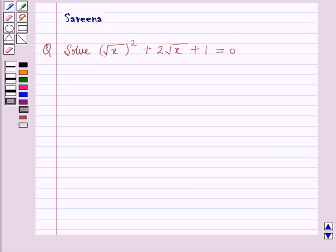Hello and welcome to the session. Here we will discuss the following question: Solve (√x)² + 2√x + 1 = 0.